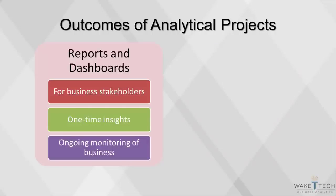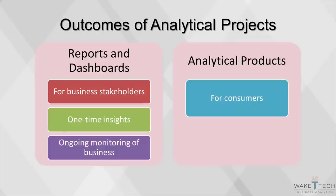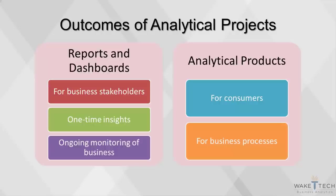The second category is the production of analytical products. In these types of projects, the business's data becomes the input for a complex process that automatically produces an action. This can take the form of features that offer a better experience for consumers — for instance, Amazon has an automated algorithm that determines products you might like to buy.